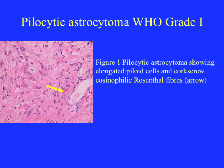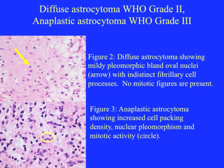As mentioned before, pyelocytic astrocytomas can be very difficult for neuropathologists because they often show microvascular proliferation and necrosis, though this is not the case in the image shown here. These images show a diffuse astrocytoma WHO grade 2 and an anaplastic astrocytoma WHO grade 3. The diffuse astrocytoma is very bland with oval nuclei, indistinct fibrillary cell processes, and no mitotic figures. These can be difficult to distinguish from reactive processes. By contrast, the anaplastic astrocytoma shows increased cellular packing density, nuclear pleomorphism, and mitotic activity — the mitosis is highlighted in the yellow circle.